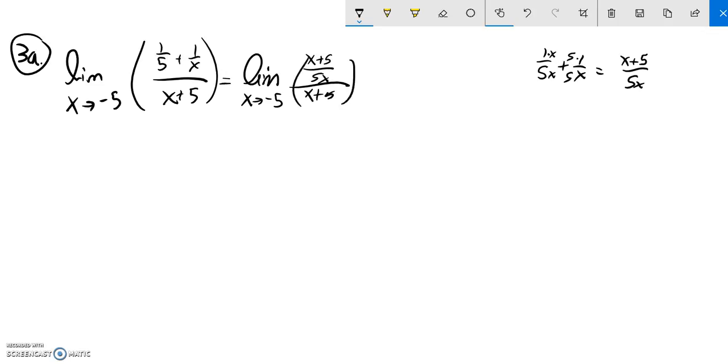Notice since this is divided by x plus five, that's the same as saying x plus five over five x times one over x plus five - divided by is the same as multiplied by the fraction. Those divide out. So this is the same as the limit as x approaches negative five of one over five x.